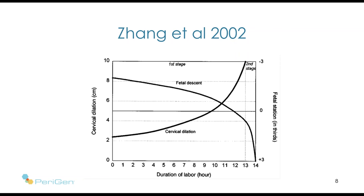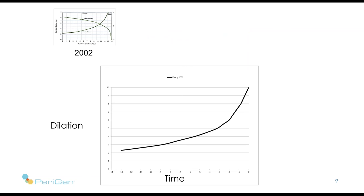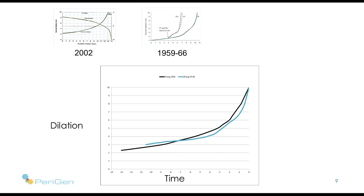Since that publication, several others have borrowed the same concept and done studies to demonstrate how, in their population, rates of dilation or station change over time. Dr. Zhang in 2010 published an article where he went back and looked at data from 1959 to 1966 — the same period when Dr. Friedman was developing his curves — and applied modern statistical methods, finding that dilation over time takes the shape of the blue line shown here, very similar to what he found with contemporary women.